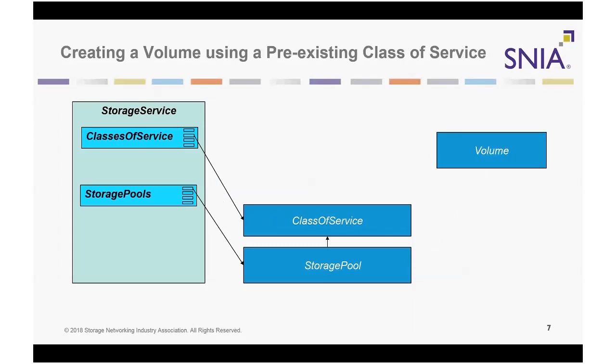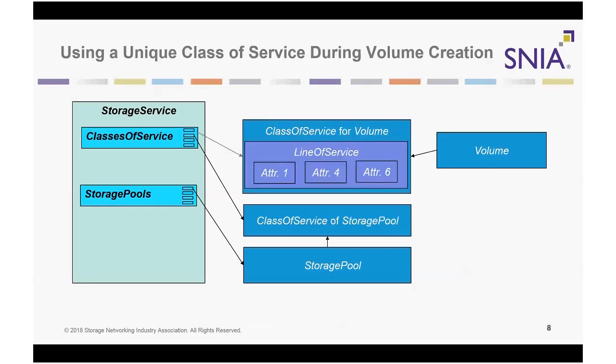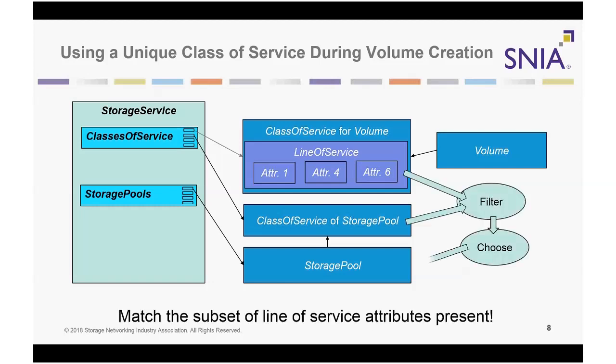A second way to use classes of service is to link a volume to a specific pre-existing class of service from a set supported by the storage service before posting it to the volume collection. During volume creation, Swordfish will then select a storage pool that references that class of service. A third way to use classes of service is to link a unique class of service resource to the volume that indicates only the subset of characteristics of interest to the volume creator. In this use case, there is no storage pool that references the unique class of service. Swordfish implementations that include this capability will choose a storage pool that supports a class of service matching the subset, regardless of any characteristics that were not called out by the volume creator.